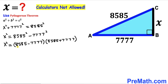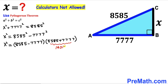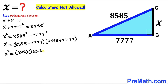Now we deal with the basic arithmetic: 8585 − 7777 = 808, and 8585 + 7777 = 16362. So we can write X² = 808 × 16362.